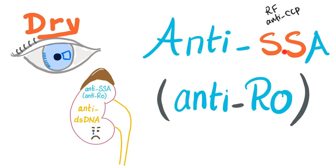Today we'll talk about anti-SSA, also known as anti-Rho. Do you know why we call them anti-SSA? SS stands for Sjögren syndrome — that's probably your first time hearing that. And 'A' because next we will talk about SSB. So we have SSA and SSB, and SS stands for Sjögren syndrome.